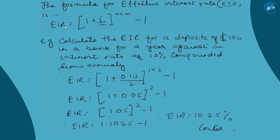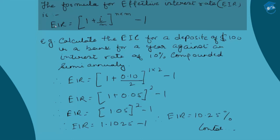The formula for the effective interest rate (EIR) is: EIR = (1 + i/M)^(N×M) − 1. If you look at this carefully, you will recognize the familiar term (1 + i)^n, which refers to the future value of a present cash flow compounded annually. The modifications here incorporate the concept of EIR: i is divided by M, where M is the number of times compounding is done in a year, and the exponent becomes N×M.